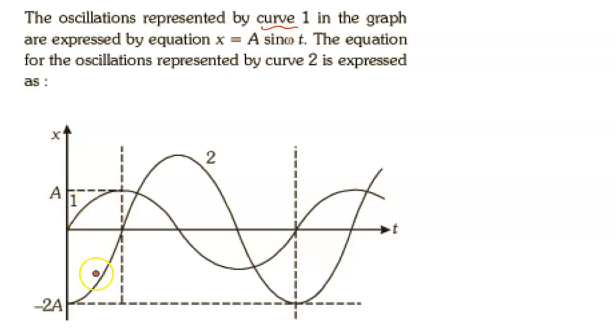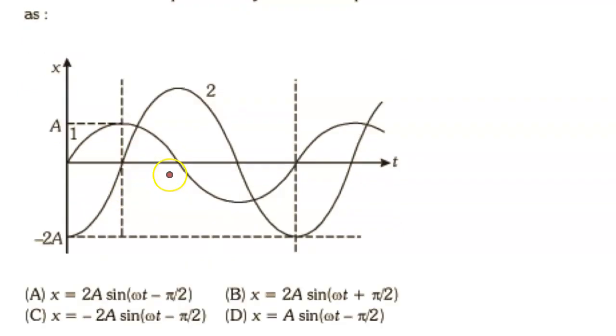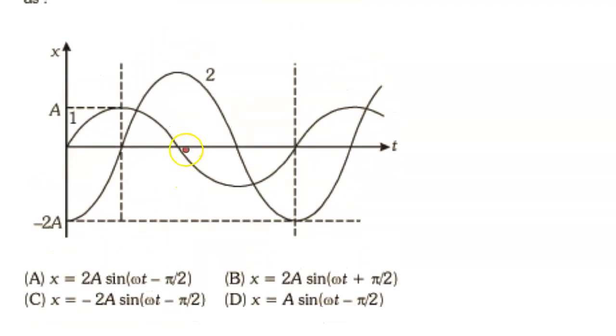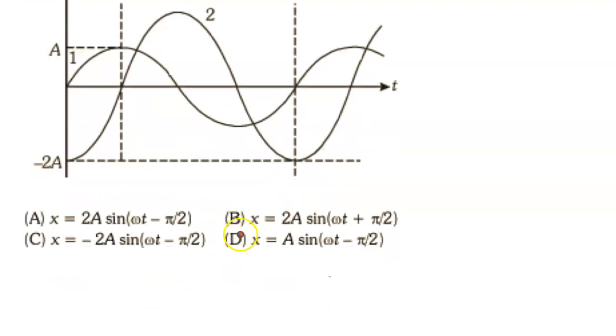We have to guess the equation of the second curve. Now it's very easy to guess. First of all, the amplitude of the second wave will be 2A, so you can remove this option. Only three options are there. Now you have to guess.